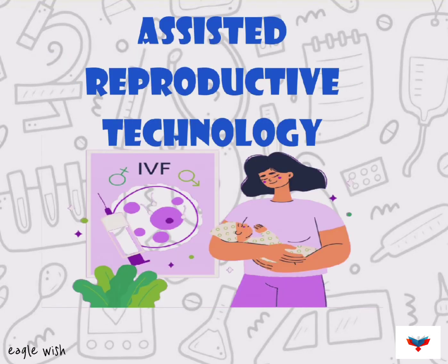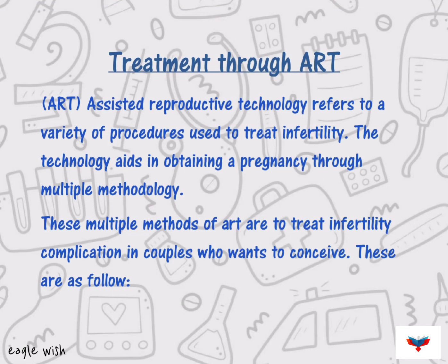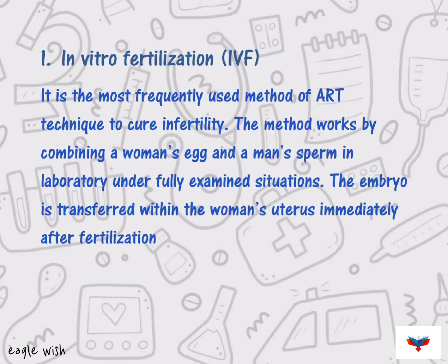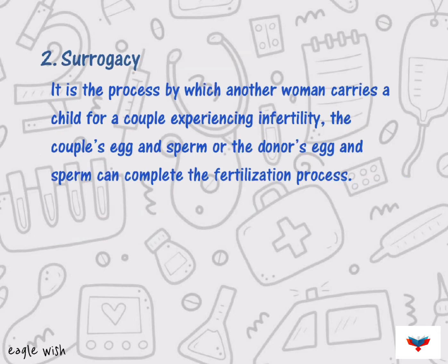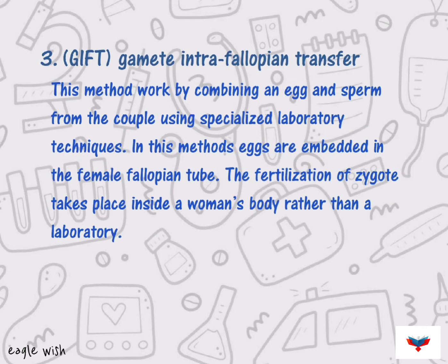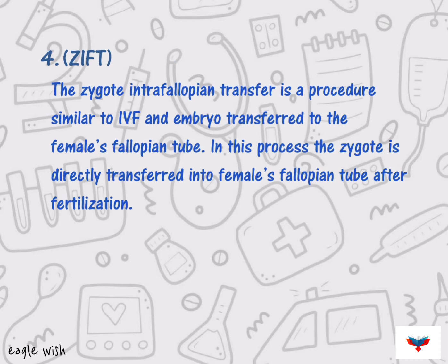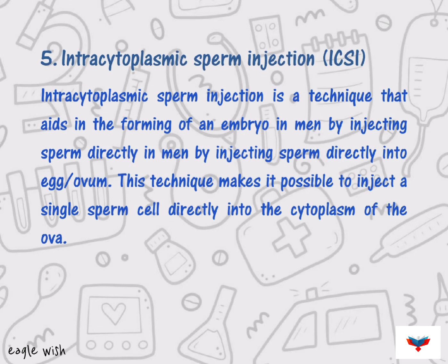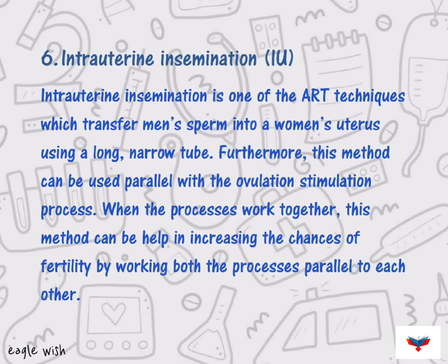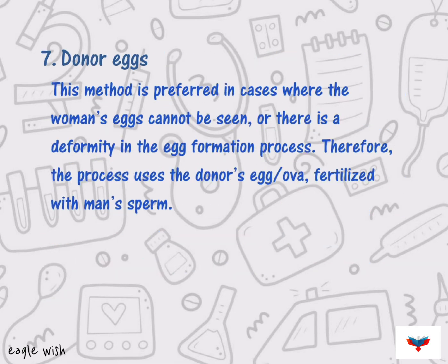Assisted Reproductive Technology is the way to treat infertility. ART includes in vitro fertilization, surrogacy, gamete intrafallopian transfer, zygote intrafallopian transfer, intracytoplasmic sperm injection, intrauterine insemination, donor, etc.